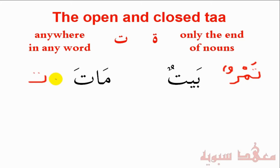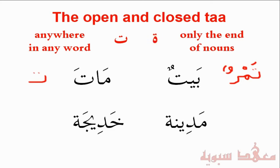Now with the tā' marbūṭa — the closed tā' — we have the following words. Notice the tā' marbūṭa at the end of the word. One thing to notice is that the way it's written is exactly the same as a hā'. If you remember, the hā' can be written in two ways at the end.